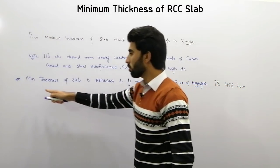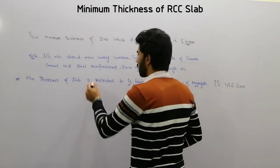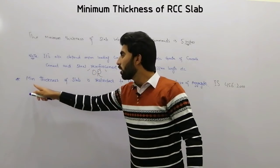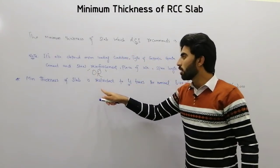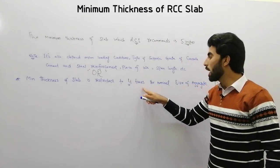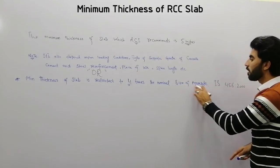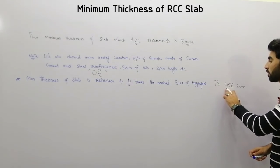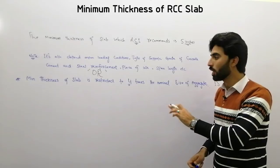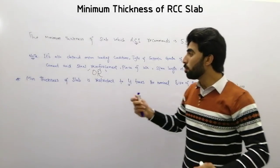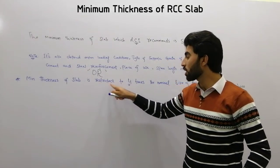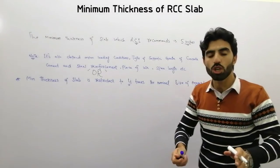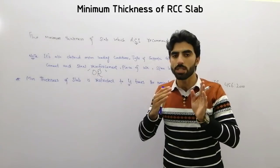There is also another point. Minimum thickness of slab is restricted to 4 times the nominal size of aggregate. This is from IS 456-2000 code. So the minimum thickness of RCC slab is restricted to 4 times the nominal size of aggregate that you are using in the RCC slab.